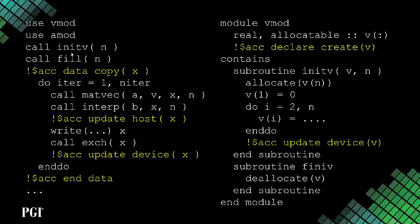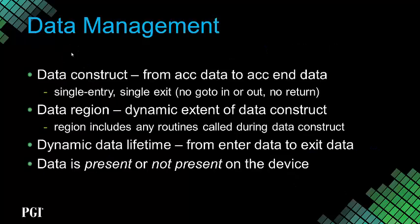There's no equivalent of the declare create feature in C or C++. This is a Fortran-only feature. Fortran has real arrays; C has a pointer, and C++ has a class library to simulate an array. Fortran is a higher-level language.